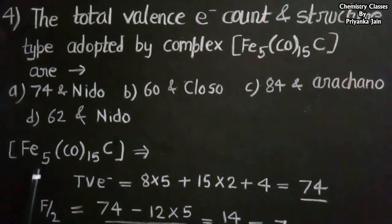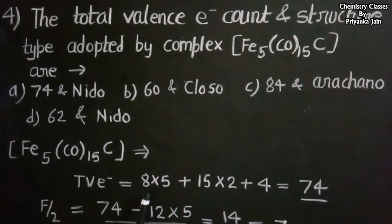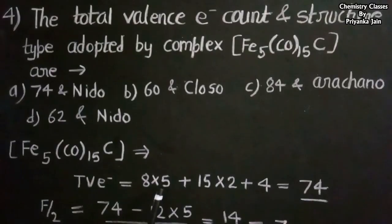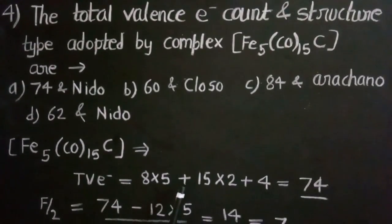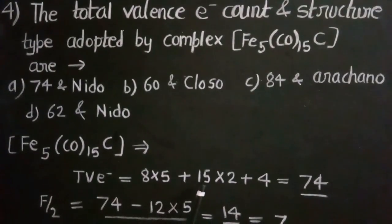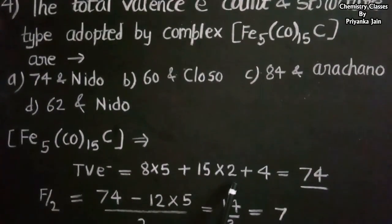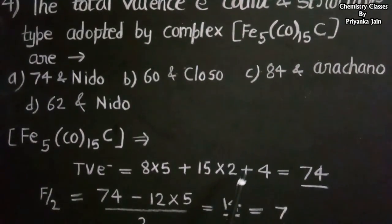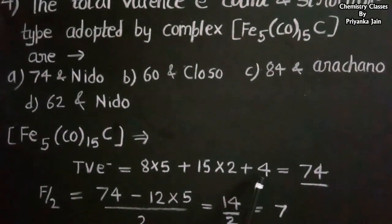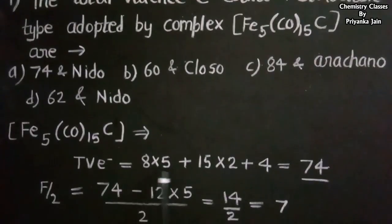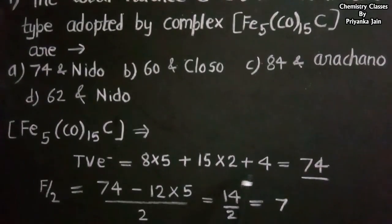With 5 iron atoms, we get 8×5 electrons, plus 15×2 for the carbonyl ligands, plus 4 from the carbon atom. Total valence electrons = 40 + 30 + 4 = 74.